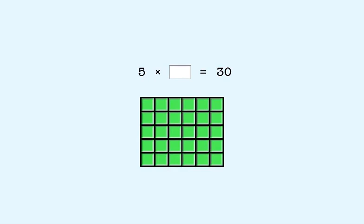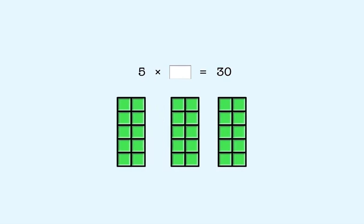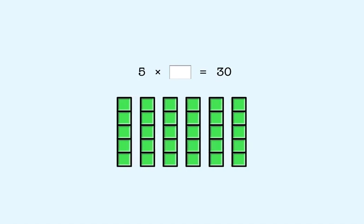30 is 3 tens. Each 10 is 2 fives. That means there are 6 fives in 30. So 5 times 6 is 30. So we put 6 as the answer here.